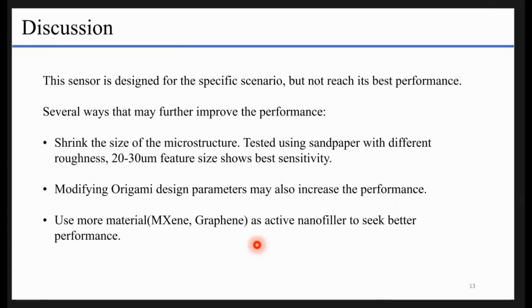To sum up, this sensor is designed for a specific scenario. We want to compare four different structures to see if the Miura array is better. We didn't push it to limit to get the best performance, but there are several ways that may further improve the performance. First, we can shrink the size of the microstructure. Because we're using 3D printing, we cannot make the structure super small but also keep good geometry.